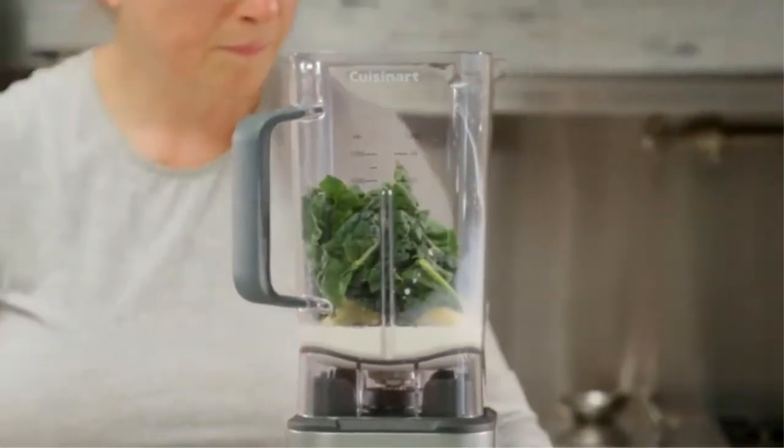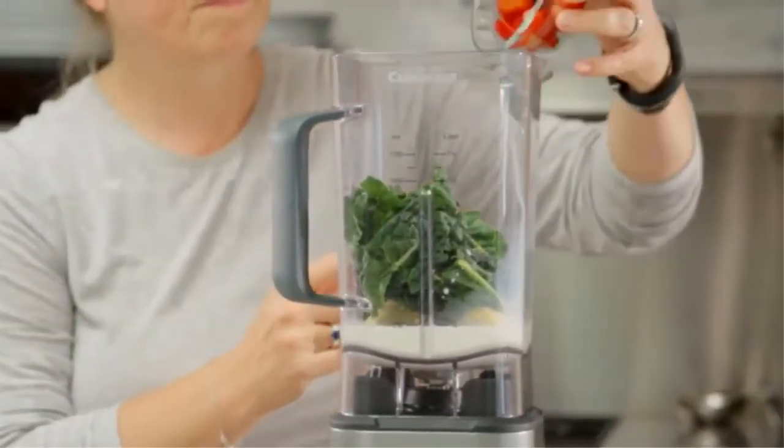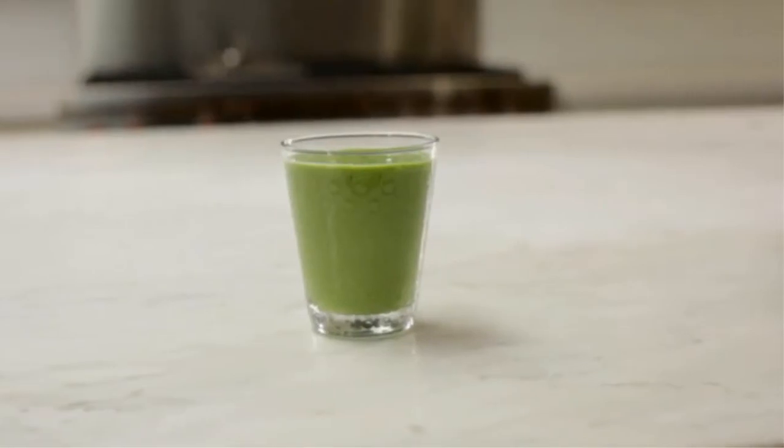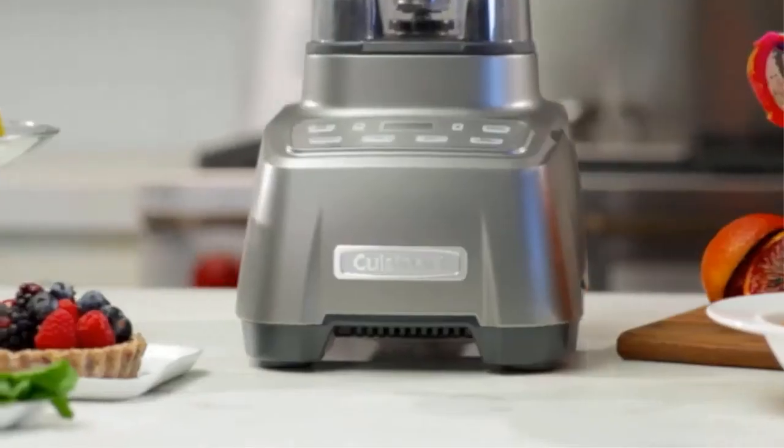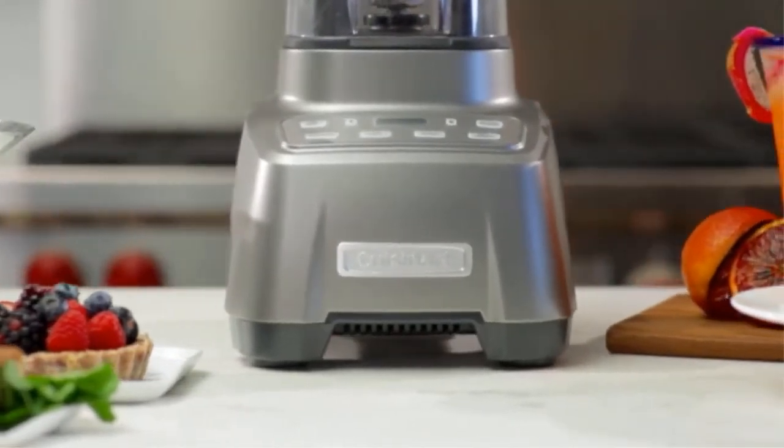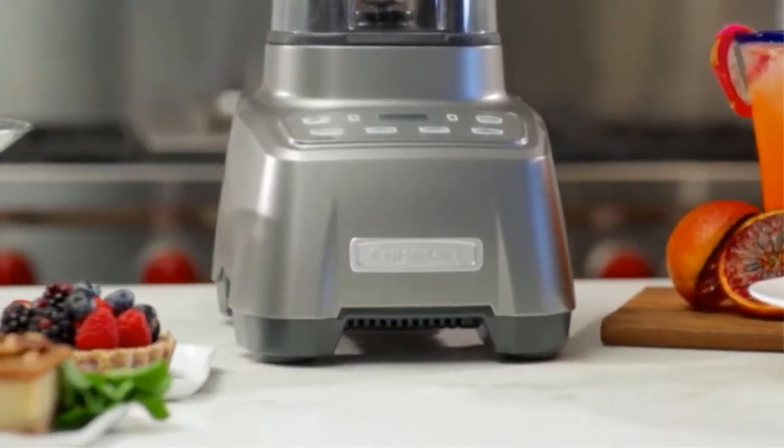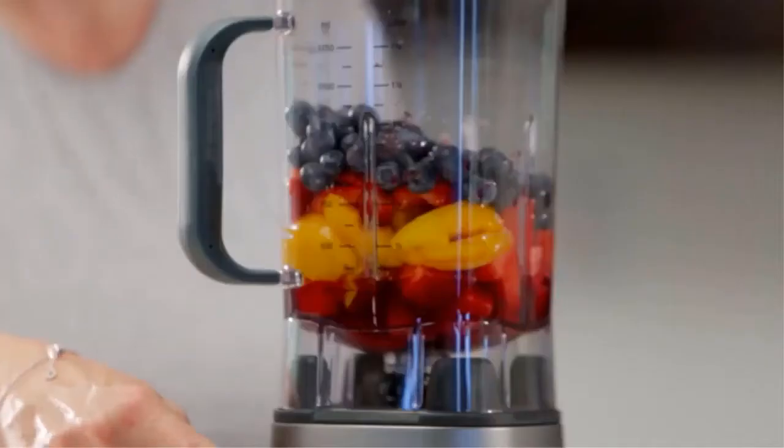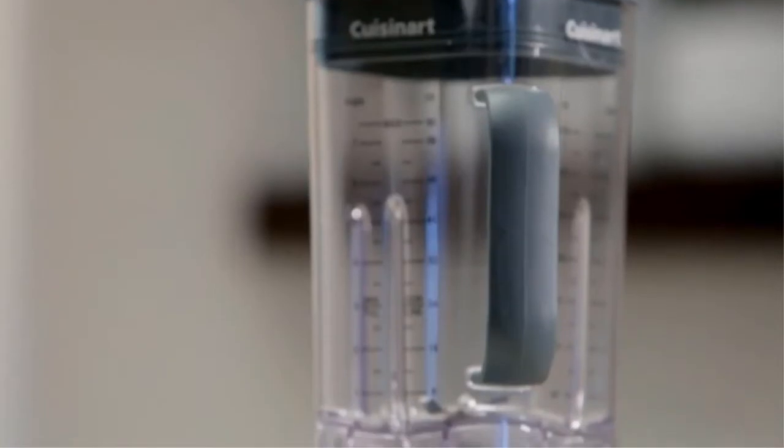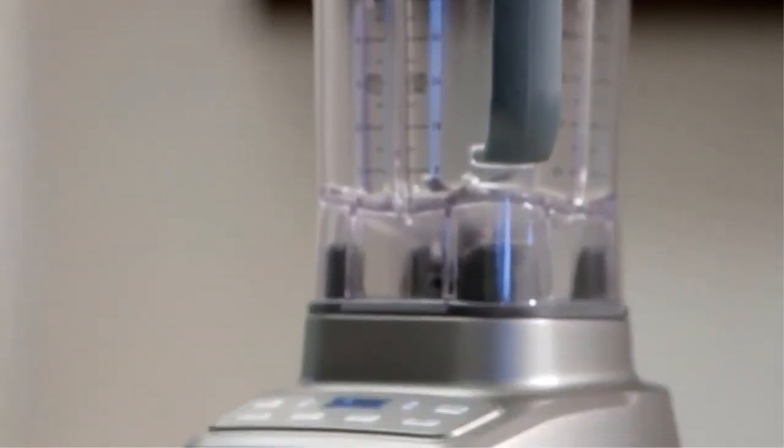Automatic load sensing technology means this smart blender knows when to adjust blending strength based on the amount of food added to the 60 ounce BPA-free Tritan jar, so your preset functions produce consistent results every time. The refined finish comes in gunmetal gray and complements your kitchen style without compromising the high quality operation and efficiency expected from a Cuisinart blender.